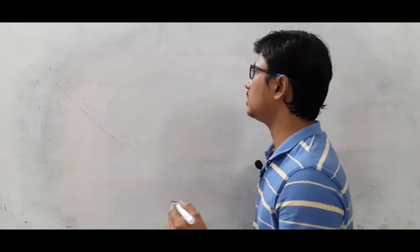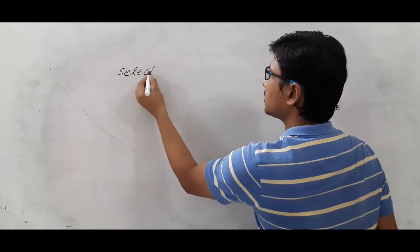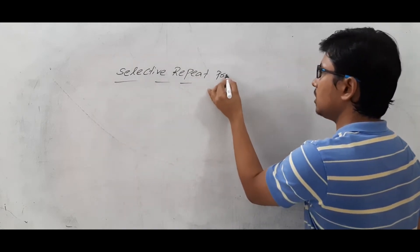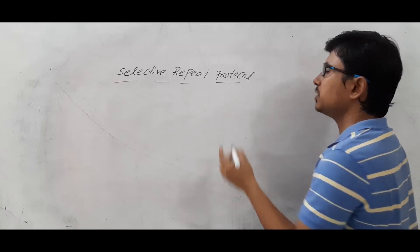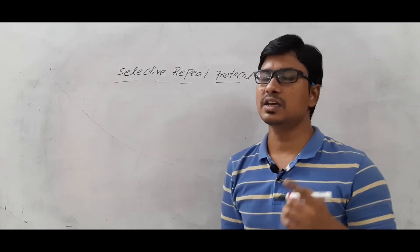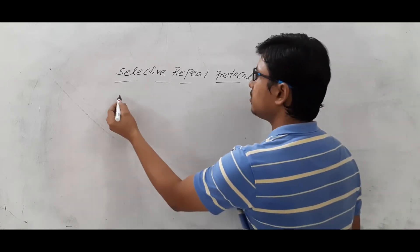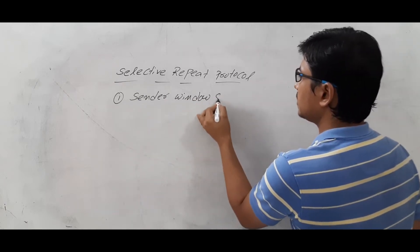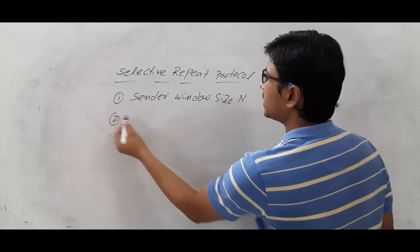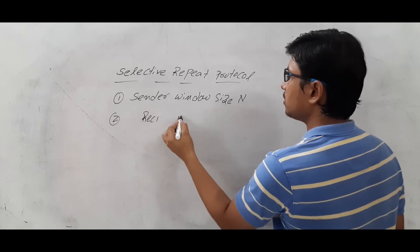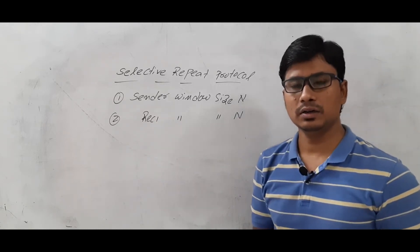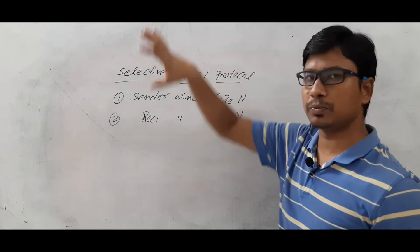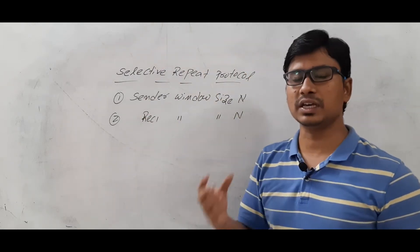Whenever we talk about sliding window protocols, we need to discuss two things: the sender window size and the receiver window size. If the sender window size is n, then for Selective Repeat the receiver window size is also n. When it comes to Go-Back-N, the sender window size is n but the receiver window size is 1. However, in Selective Repeat protocol the sender window size and receiver window size are equal.